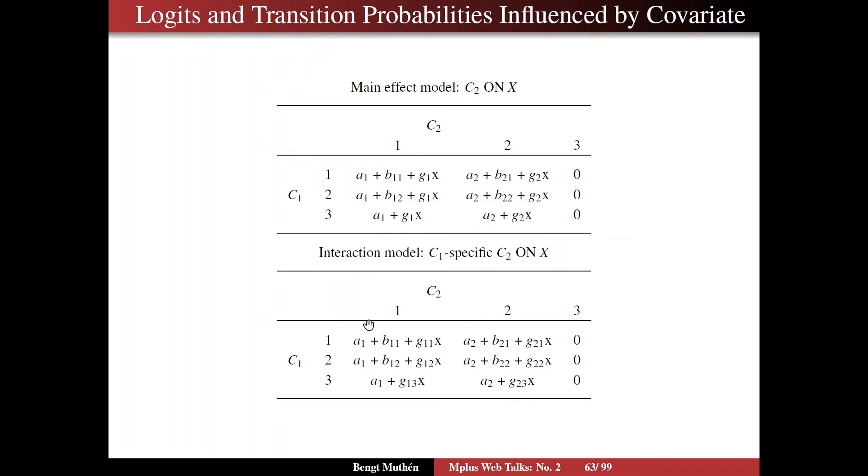In the interaction model, however, with C1 specific C2 on X, then the g slopes vary across the C1 classes. So the effect on C2 depends on where you started. Same thing for C2 class 2, those effects vary. And in all cases, we compare to the last class as the default in M-plus.